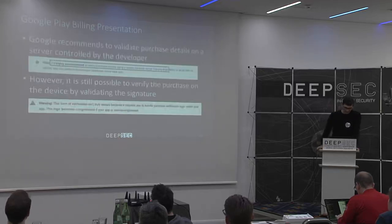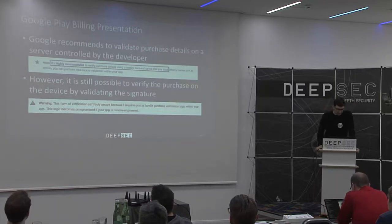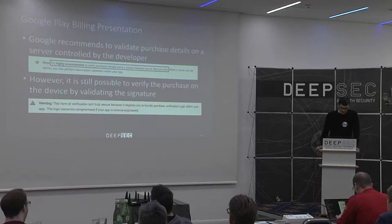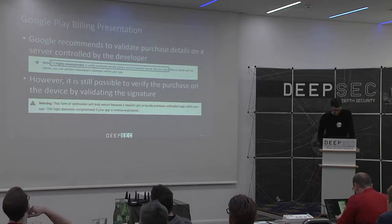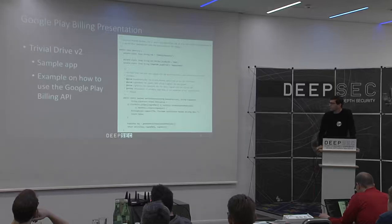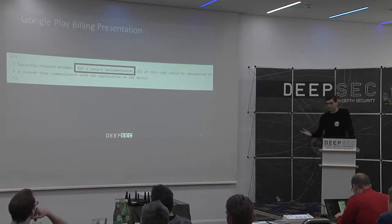Because of this, Google recommends validating purchase details on a server controlled by the developer — because if you do it on the device, someone can mess up the verification process. However, it's still possible to verify on the device, but the documentation warns this form of verification isn't truly secure and this logic can become compromised if your app is reversed. Looking at the Trivial Drive sample application code, there's a 'Security' class with a verifyPurchase function — but the comment says for a secure implementation all this code should be on a server. Yet the sample application does it locally.